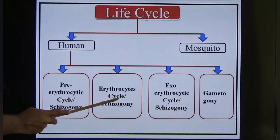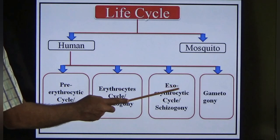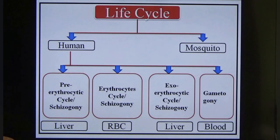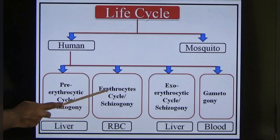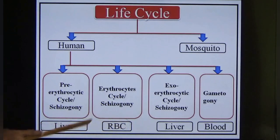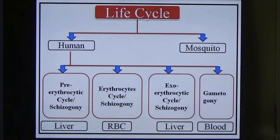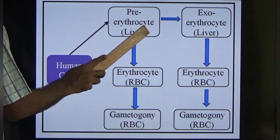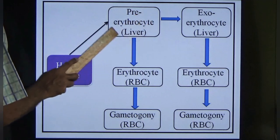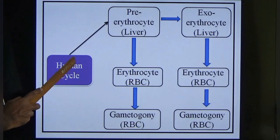For the human life cycle, we divide it into four stages: pre-erythrocytic cycle, erythrocytic cycle, exo-erythrocytic cycle and gametogony. The pre-erythrocytic and exo-erythrocytic cycles both happen in the liver; the erythrocytic cycle happens in the RBC; and gametogony appears in the blood. The pre-erythrocytic cycle is where primary malaria originates, while the exo-erythrocytic cycle leads to relapse malaria.